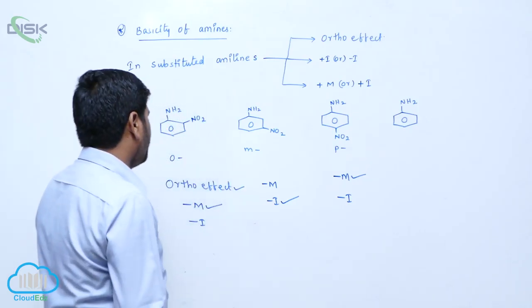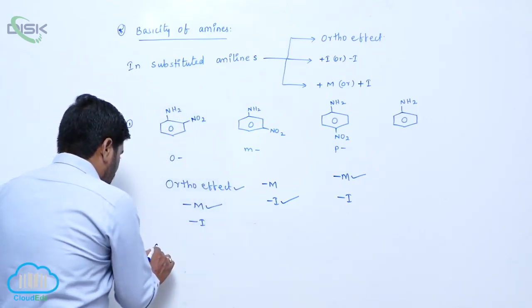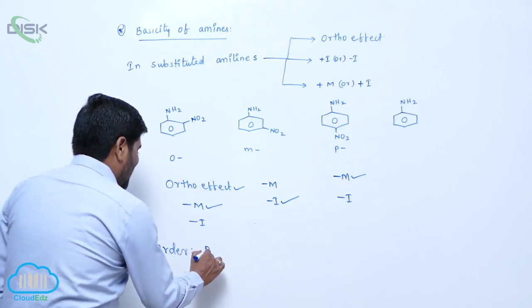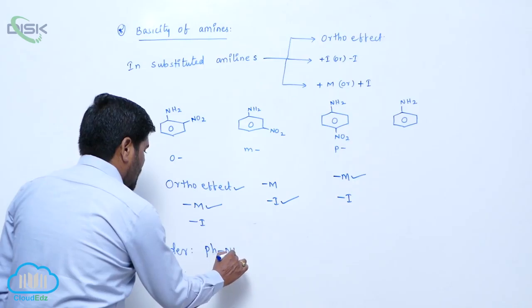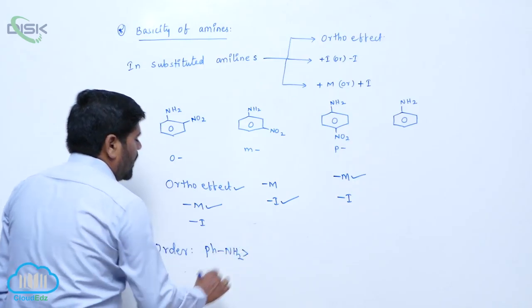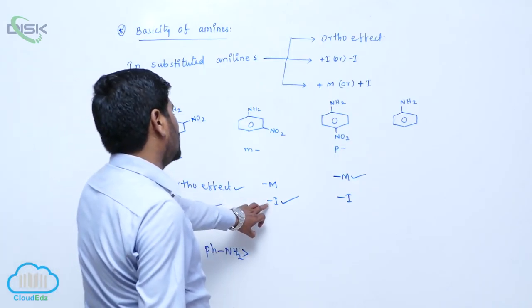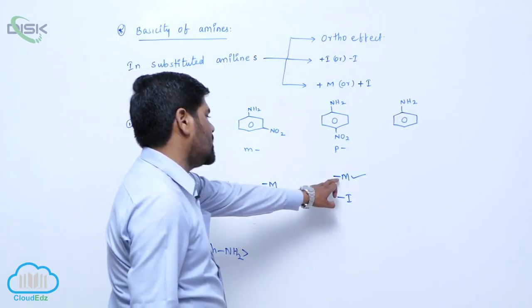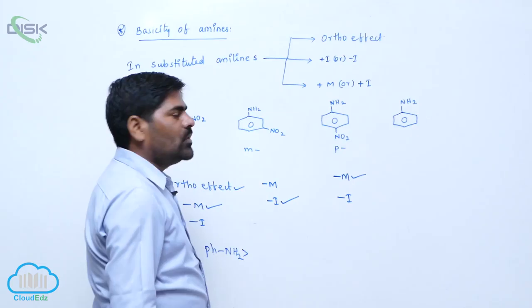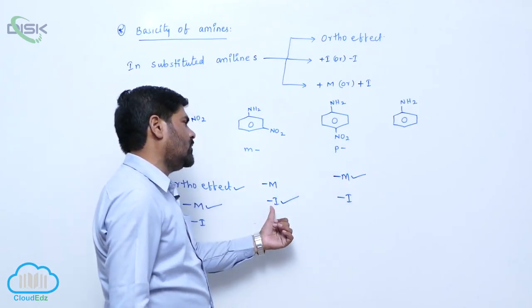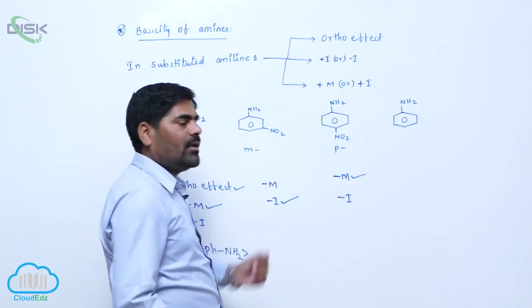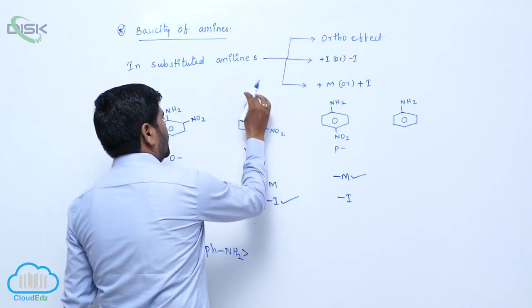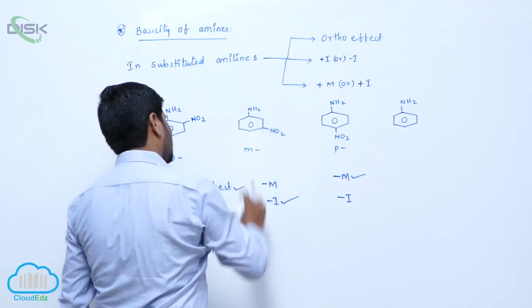So the order of basicity: Aniline is greater than the nitroanilines. We should consider the inductive effect and mesomeric effect. The mesomeric effect is predominate over the inductive effect. That is the reason why the nitrogen lone pair of electrons donation capacity increases.